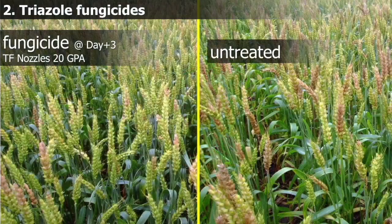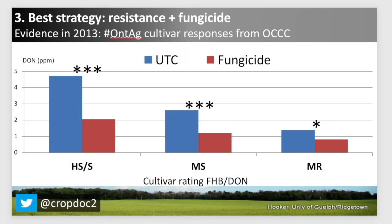The second milestone in management is fungicide. Fungicide technologies have increased tremendously since 1996. With the latest fungicides, we can expect between 50 and at most 60% reduction in DON with a timely application. If you combine the best cultivar resistance plus a timely application of the right fungicide, we can reduce DON in wheat by 80% compared to a highly susceptible cultivar with no fungicide.